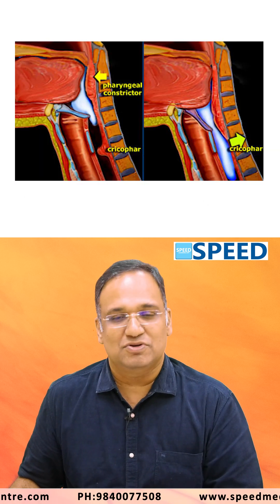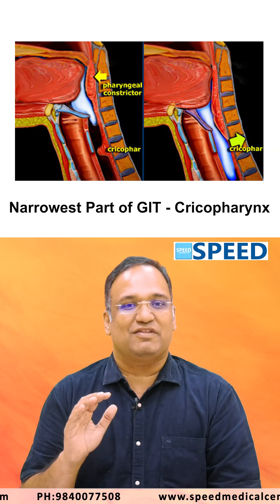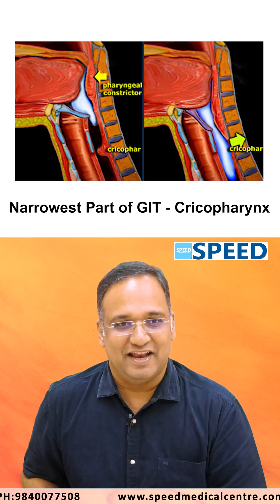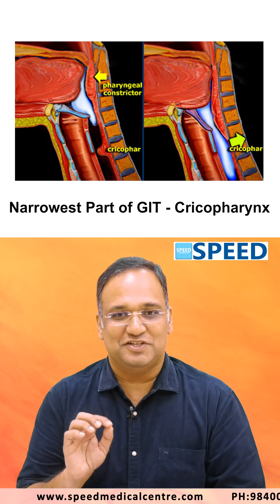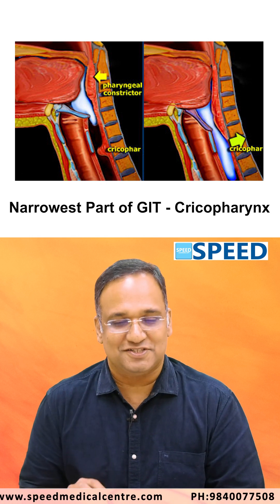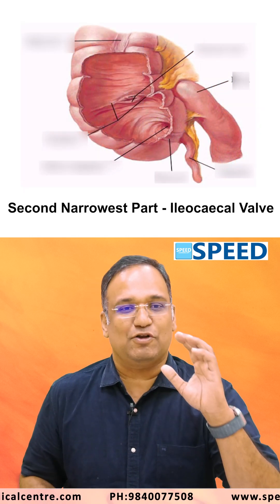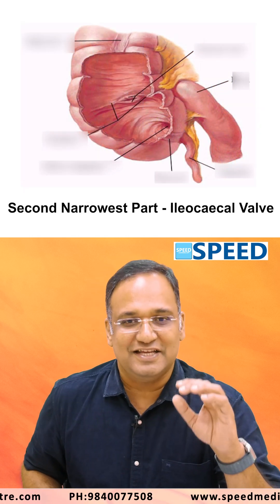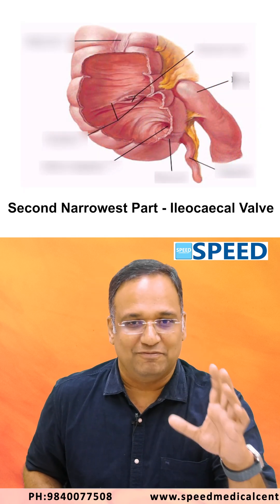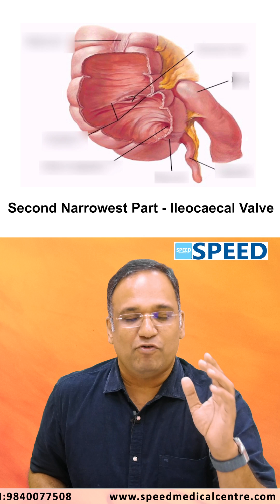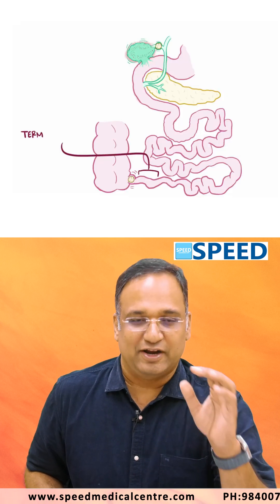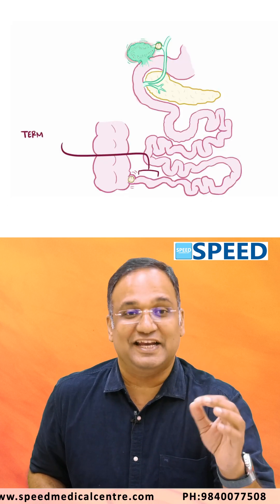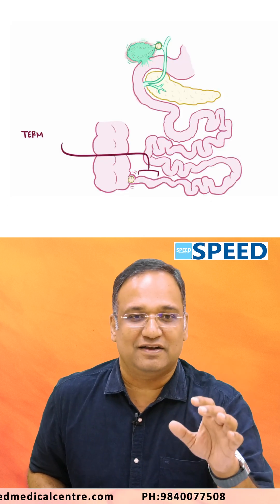If they ask you the narrowest part of the GIT, the narrowest part will be the cricopharyngeal constriction of the esophagus. The second narrowest part of the GIT is at the ileocecal valve. If any foreign body is able to get across the cricopharyngeal constriction, it can get impacted at the ileocecal valve.